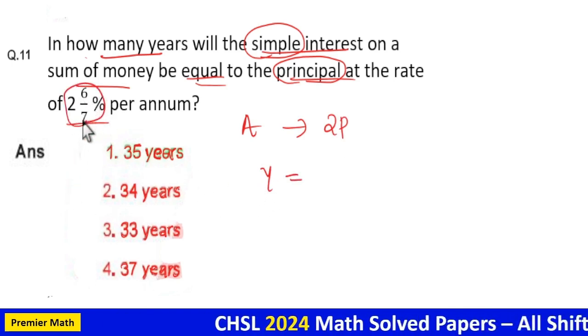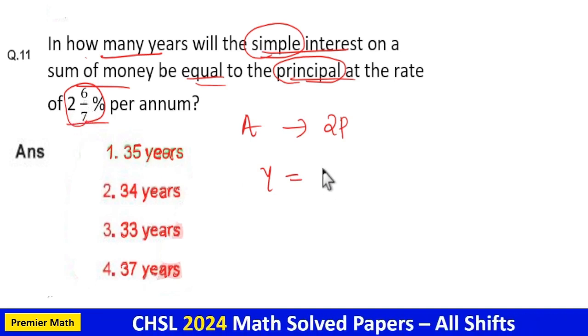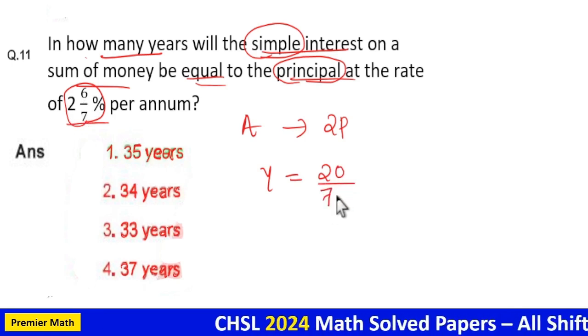Here rate is equal to 2 into 6 by 7 percentage means 7 into 2, 14, 14 plus 6, 20. So 20 by 7 percentage is the rate. 20 by 7 percentage means, percentage means by 100.